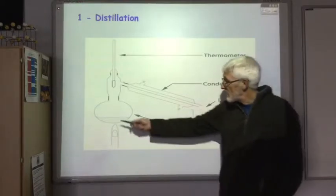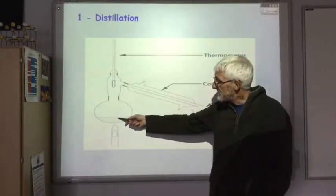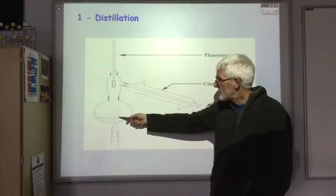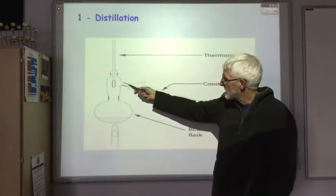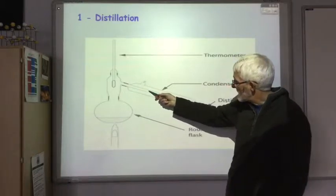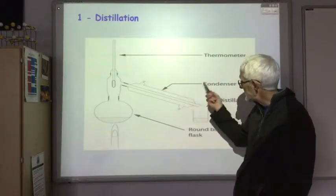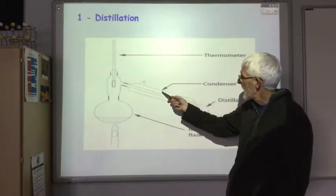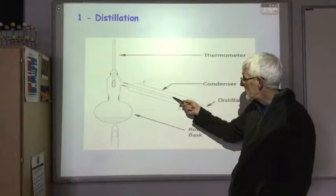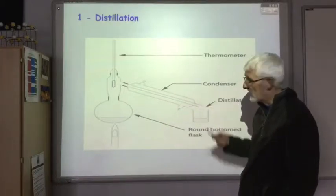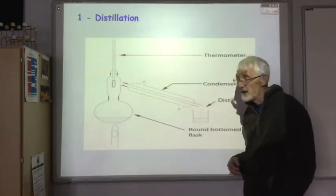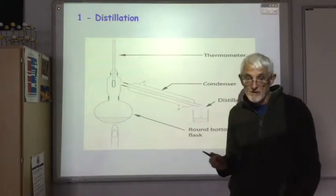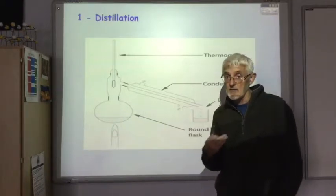So we heat up the mixture to 80 degrees, the ethanol boils, the gas travels up here down this tube where it's cooled by the condenser which should have cold water flowing through it. The gas cools down to below 80, turns back into liquid and is collected over here. But it can be used to separate any mixture of liquids as long as they have different boiling points.